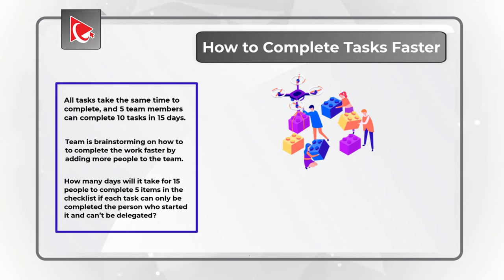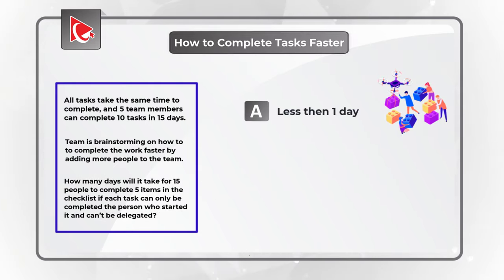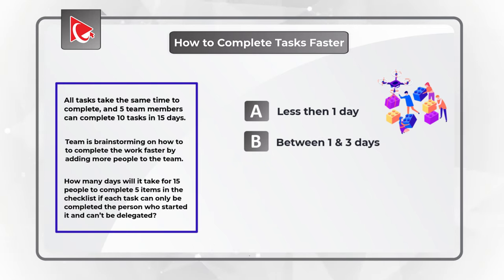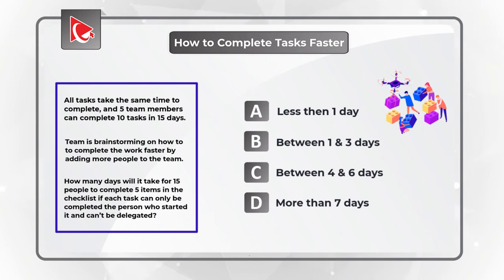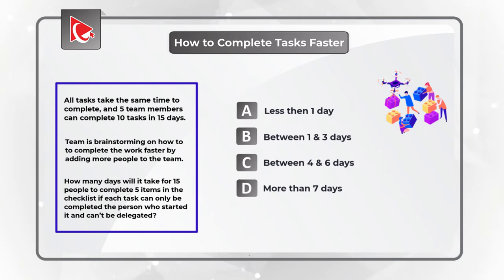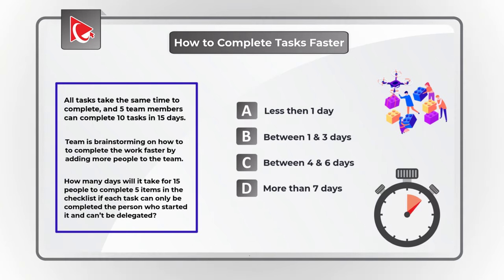You have 4 different choices: Choice A, less than 1 day; Choice B, between 1 and 3 days; Choice C, between 4 and 6 days; and Choice D, more than 7 days. Do you see the answer? Give yourself a little bit of time, maybe 10 to 15 seconds, to see if you can calculate it.